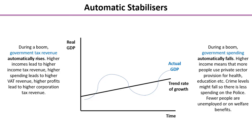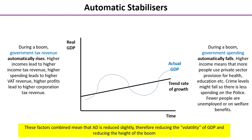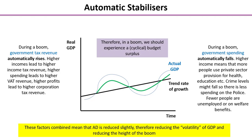Higher income means that more people use private sector provision for things such as health and education. Crime levels might fall, so there's less spending on the police, and fewer people are unemployed or on welfare benefits. Altogether, AD is reduced slightly — there's slightly higher tax revenue and slightly less government spending — which reduces the volatility of GDP and reduces the height of the boom. This means we should experience a cyclical budget surplus, as tax revenue is rising and government spending is automatically falling.